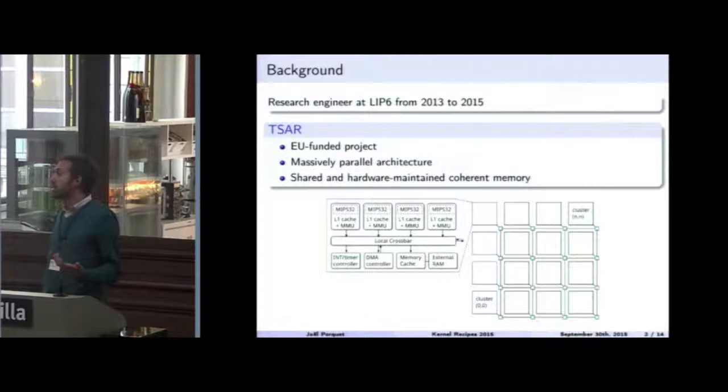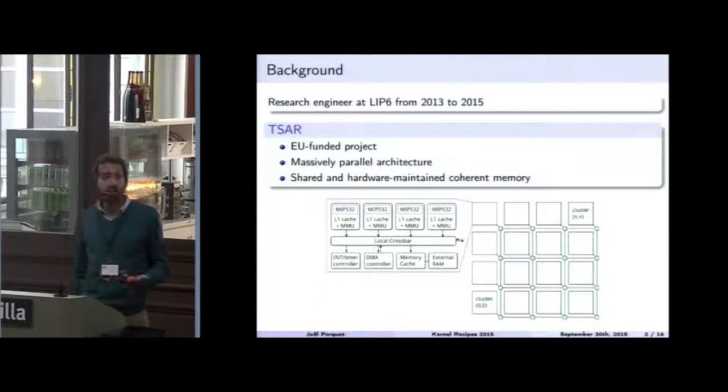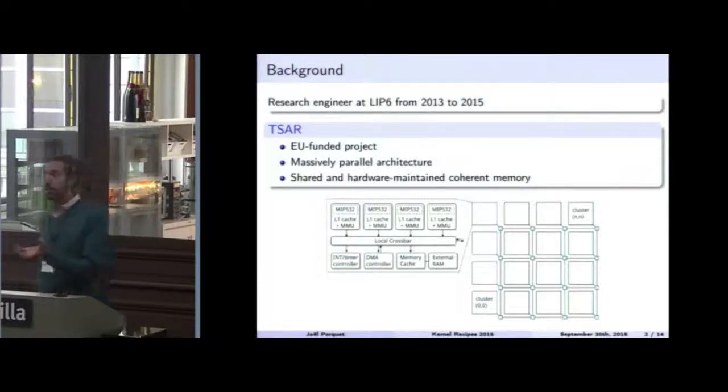Tsar was a European project, I say was because the project is over now, aiming to define a massively parallel architecture, meaning up to thousands of cores, like small and energy efficient processor cores, around a network on chip with shared and hardware maintained coherent memory. That's the nice feature of this architecture.